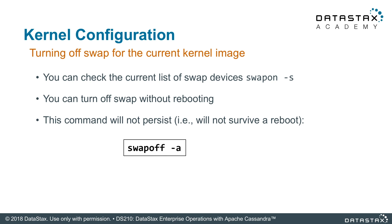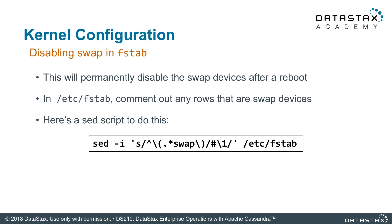So we want to disable swapping completely. You can turn off swapping without rebooting using the swapoff -a command. This makes changes in the running image, but it doesn't turn off swap permanently. You can permanently disable swap devices after reboot by editing the fstab file.